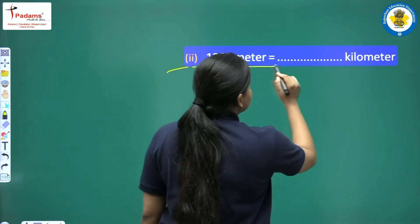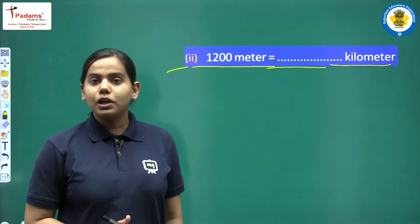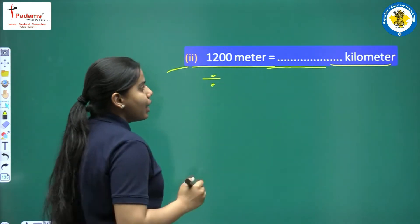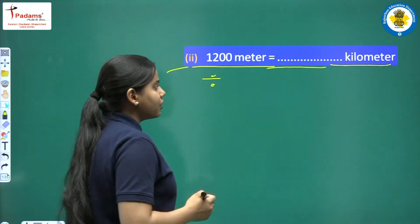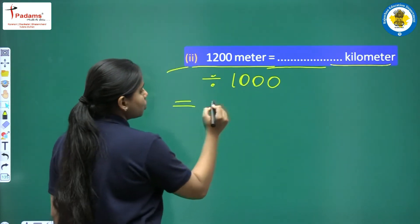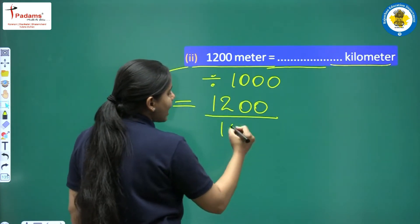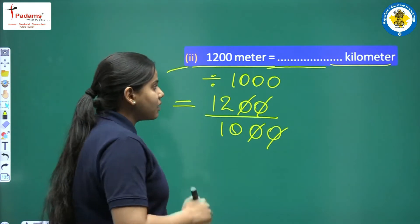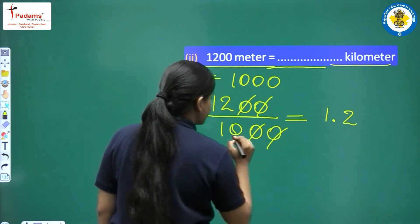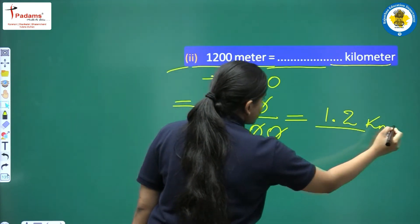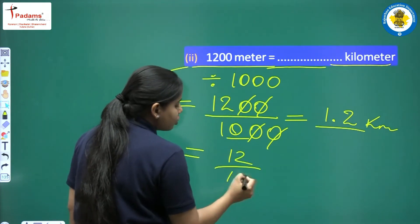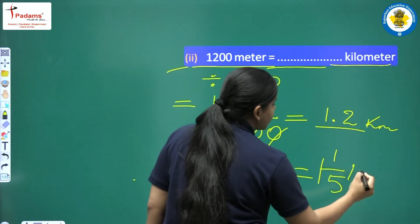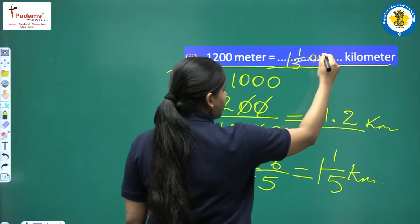Second: 1200 meters equals dash kilometers. Here we have to convert meters to kilometers. Again, from a smaller unit to a bigger unit, so we apply division. Because 1 kilometer equals 1000 meters, we divide by 1000. So 1200 divided by 1000 — zero cancels zero, leaving 12 upon 10. In decimals that is 1.2 kilometers. Alternatively, dividing by 2 gives 6 upon 5, which as a mixed fraction is 1 whole 1 upon 5 kilometers. Both answers are the same.